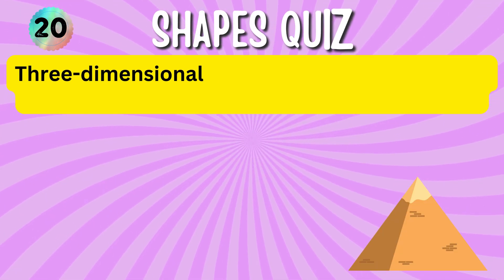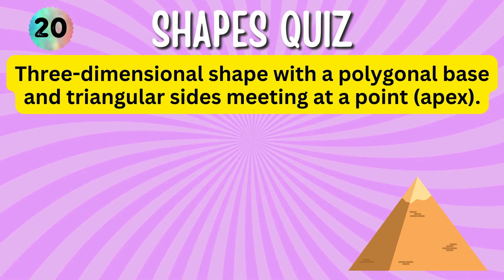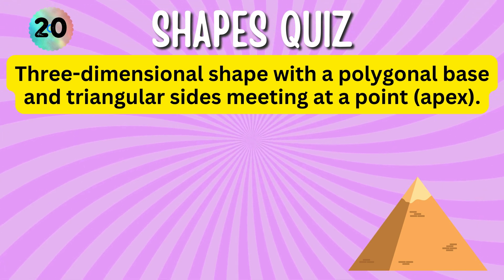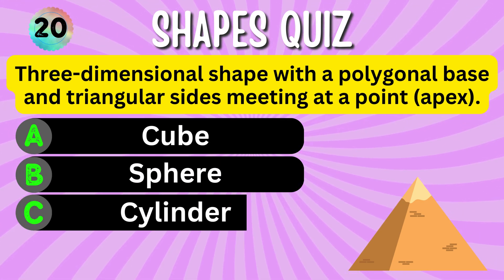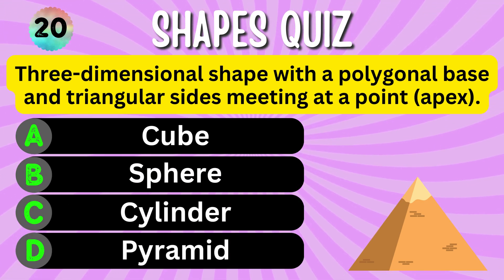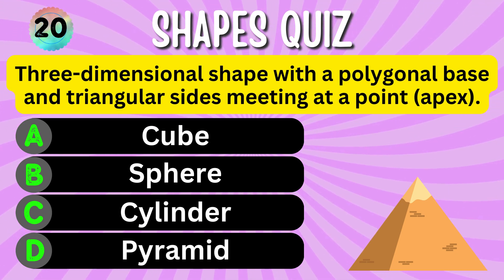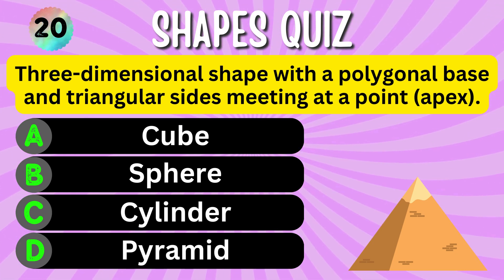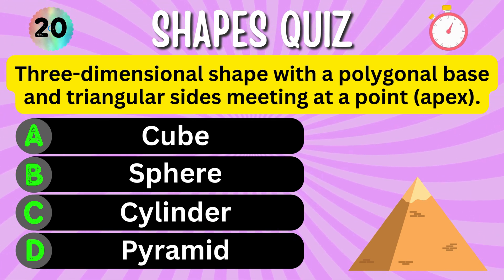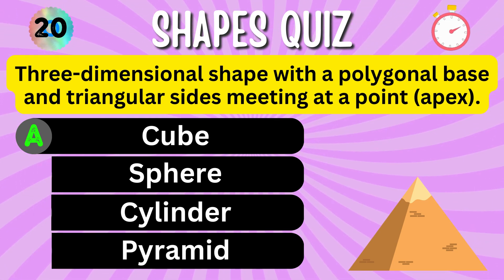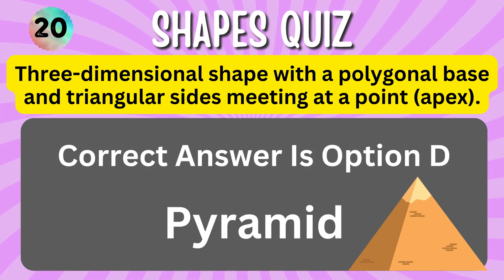Three-dimensional shape with a polygonal base and triangular sides meeting at a point, apex. Option A. Option B. Option C. Option D. You have 5 seconds to choose the correct answer. Your time starts now. The correct answer is Option D, Pyramid.